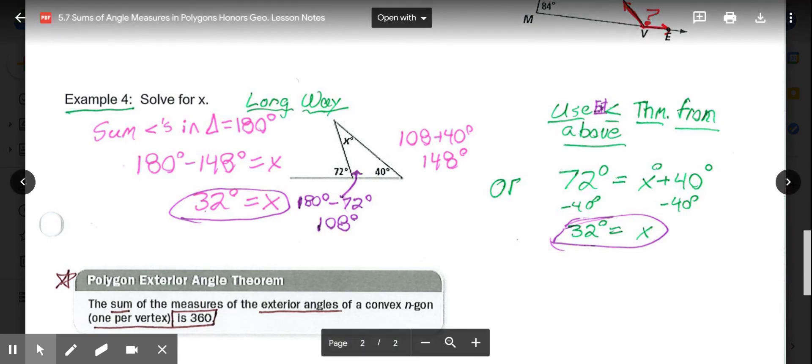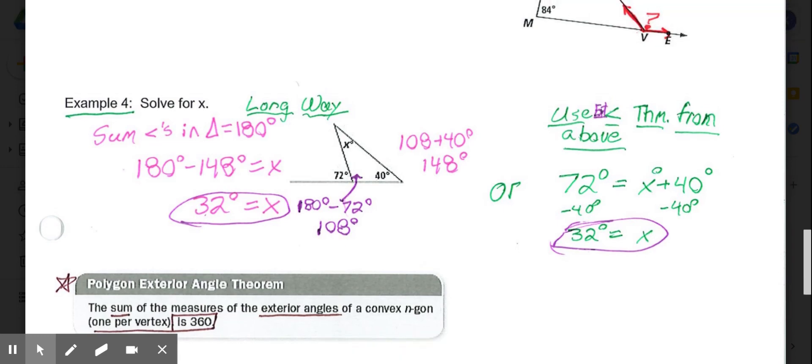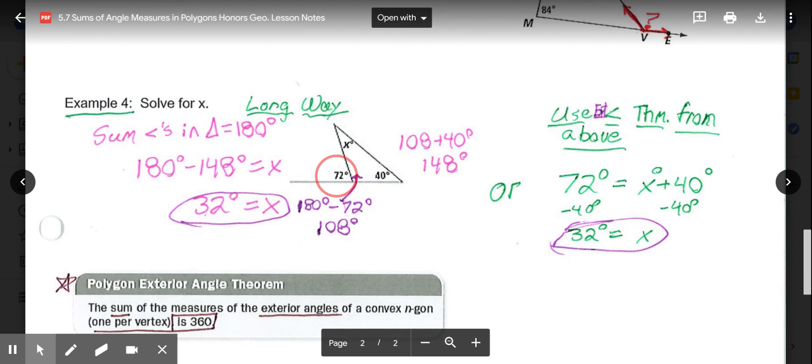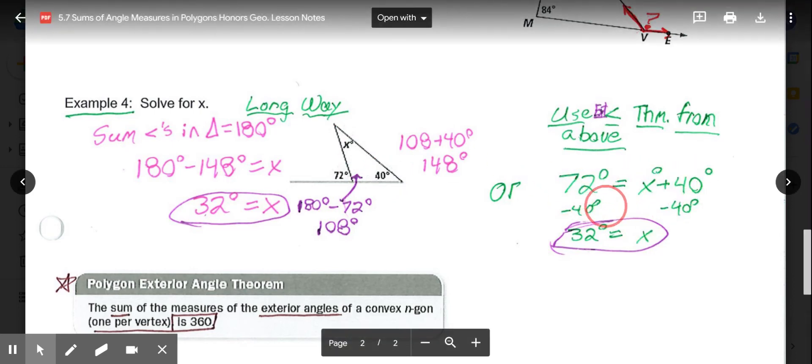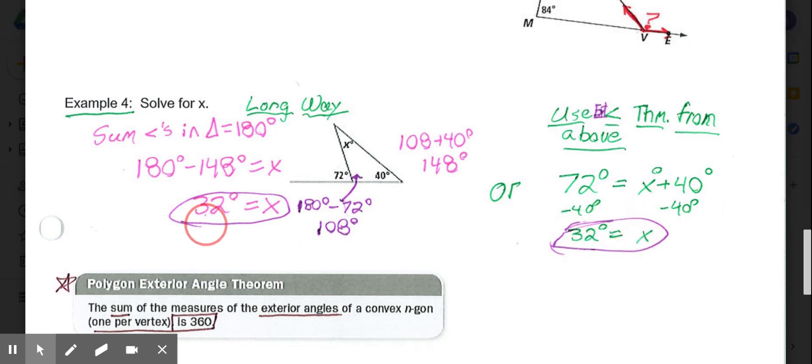Or, I could use my theorem from above, which tells me my exterior angle here, 72, is equal to this angle plus this angle. So, 72 equals X plus 40. Subtract 40, and X equals 32 degrees. Either approach gets you the correct answer.